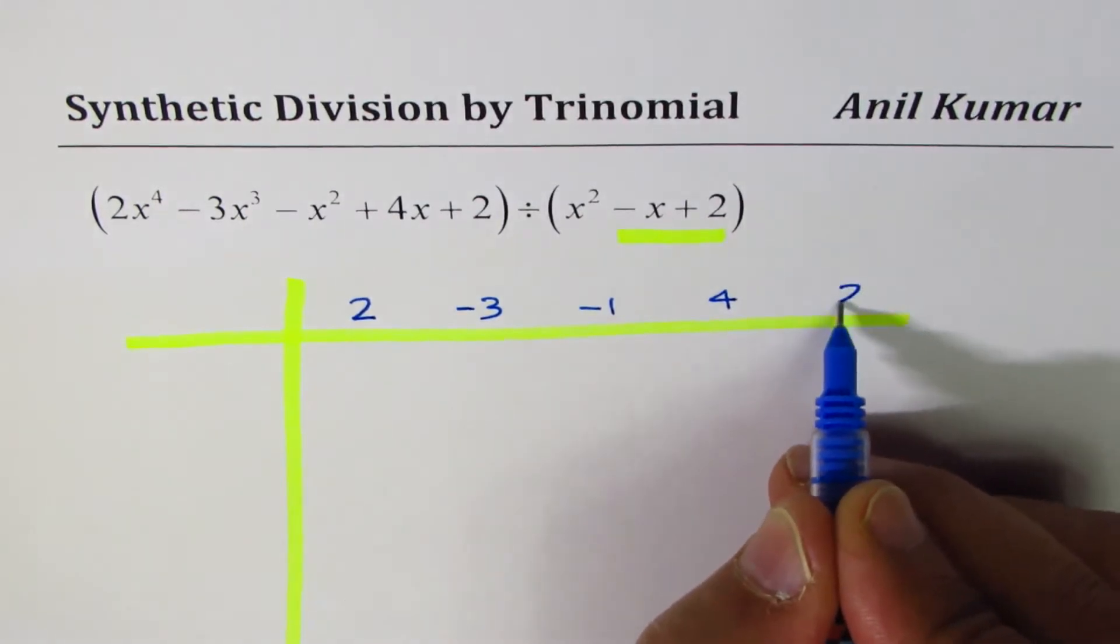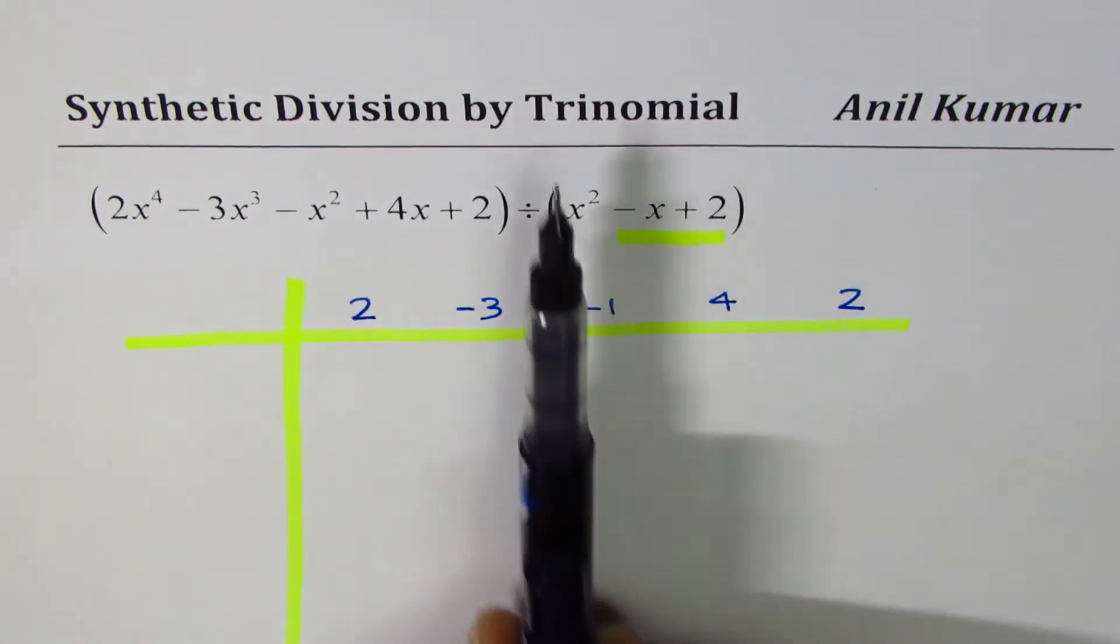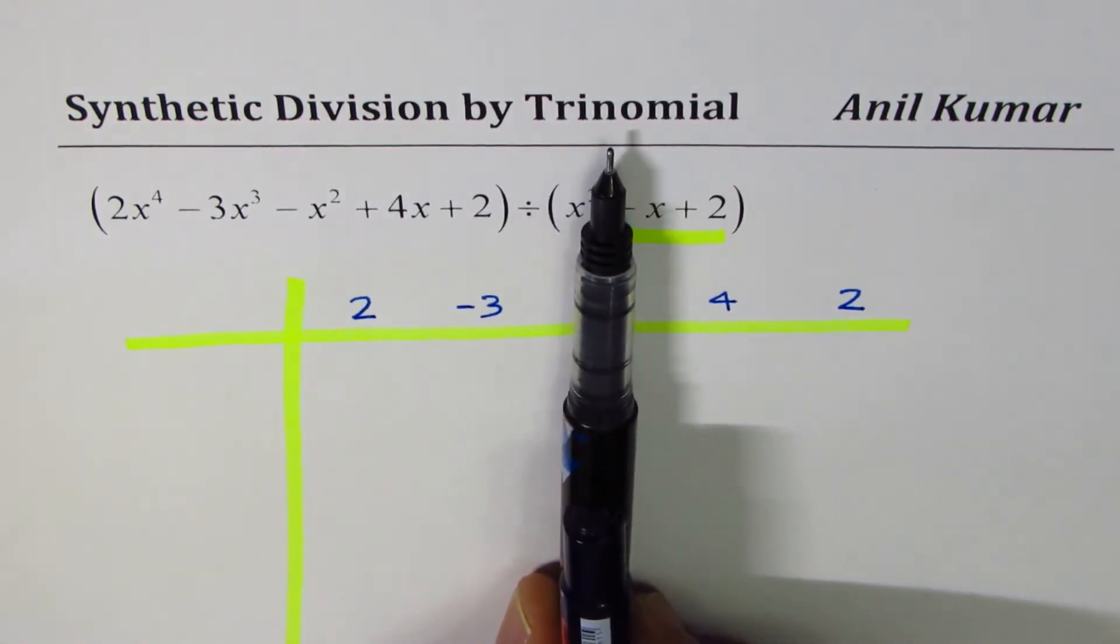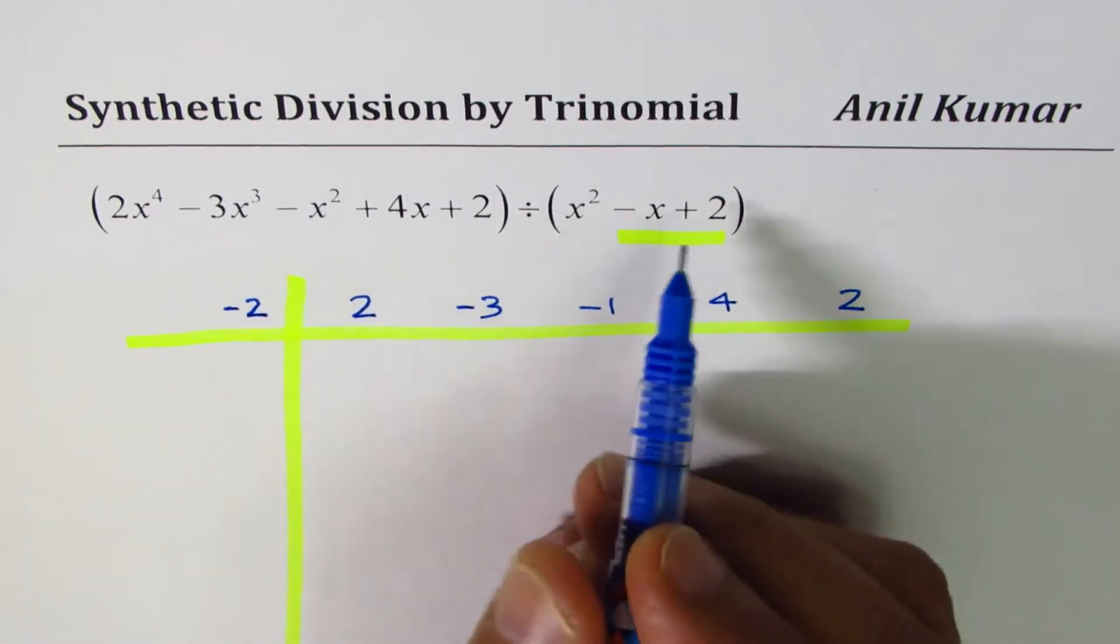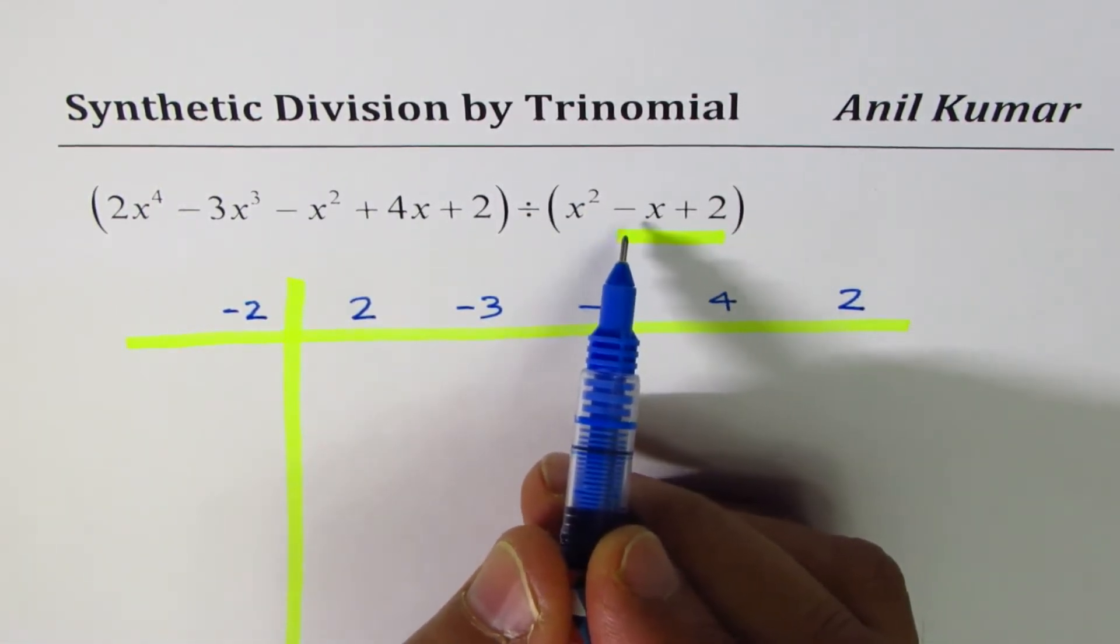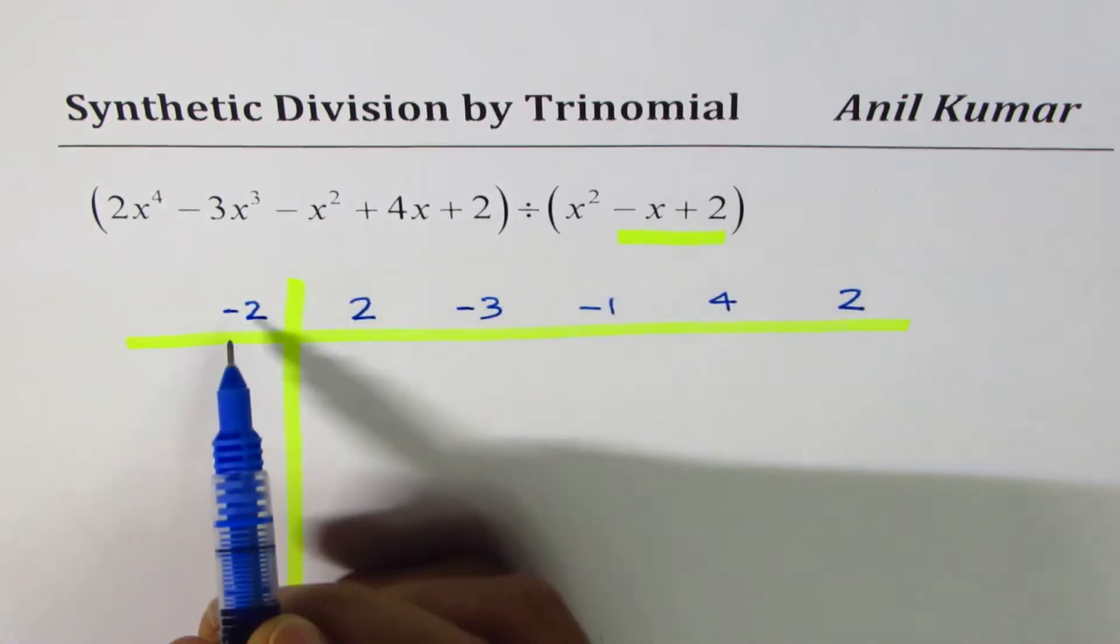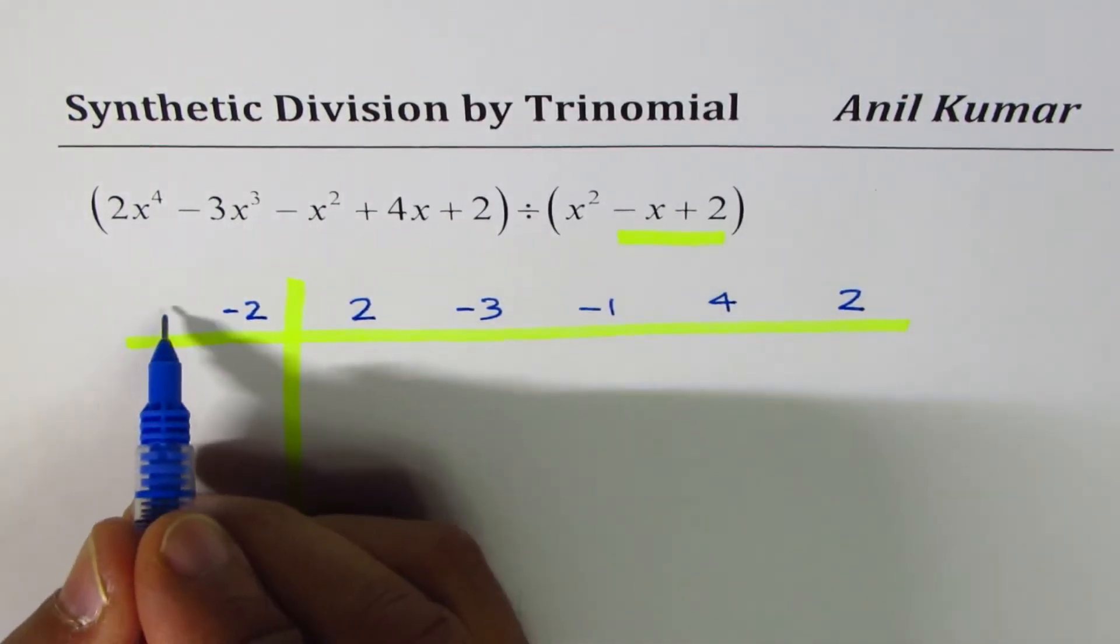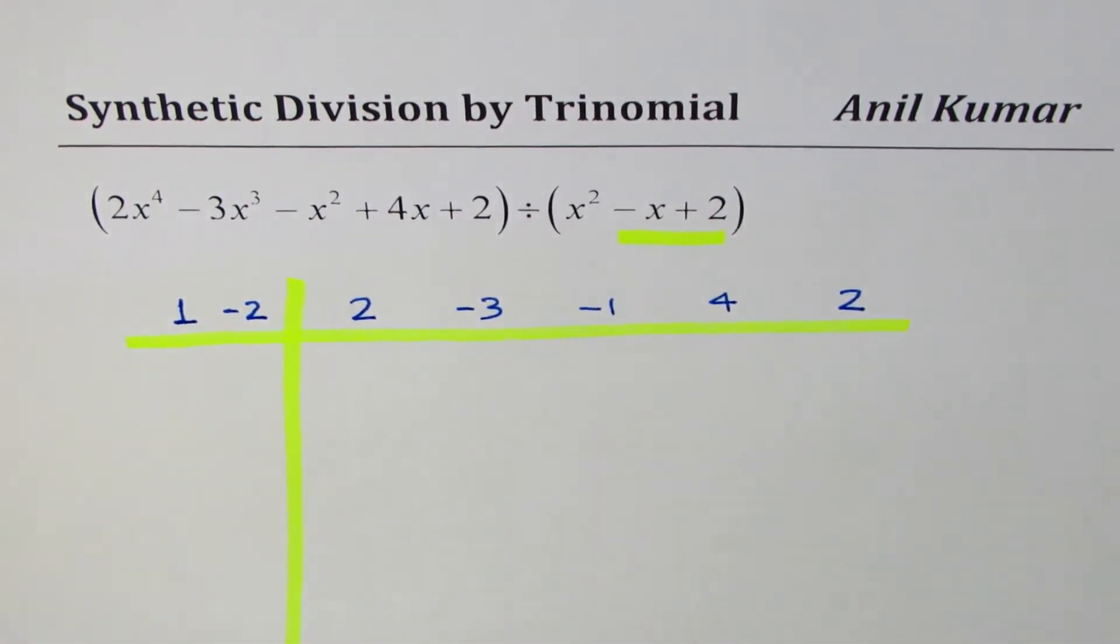Now what should go into the divisor? Think like this: if it was a linear function, let's say x plus 2, then minus 2 would go there. Now we have another term here, so we'll do the sign or conjugate of the coefficient. This is plus 2, we write minus 2. This is minus 1, so we'll write plus 1. That is how we will decide on the divisor.